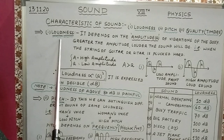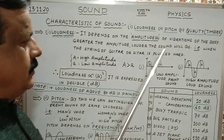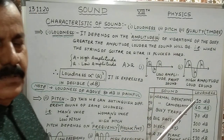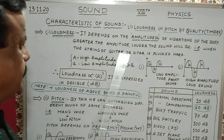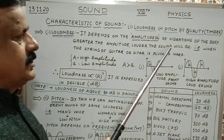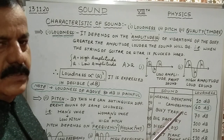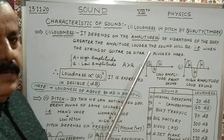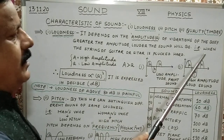Coming to number one: loudness. It depends on the amplitude of the vibrations of the body. Greater the amplitude, louder the sound will be. Loudness is directly proportional to the amplitude. Greater amplitude means louder sound, and vice versa.